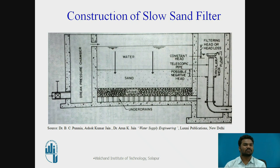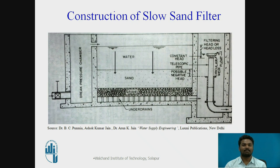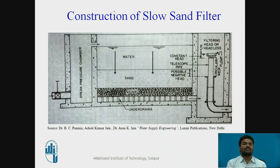The under drainage system supports both the sand and gravel material, and is provided to drain the filtered water after it passes through the sand and gravel. This drainage system consists of lateral pipes — earthen pipes of diameter 7.5 to 10 cm — placed at a center-to-center distance of 2 to 3 meters.